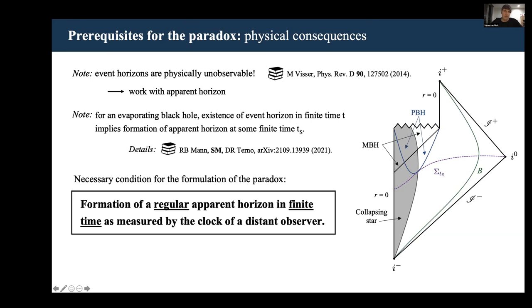By regularity, we simply mean that the curvature scalars should be finite at the horizon, for example, the trace and the square of the energy momentum tensor. In fact, in a few theories and curved backgrounds, this is also a necessary assumption to ensure that you maintain predictability of the theory.